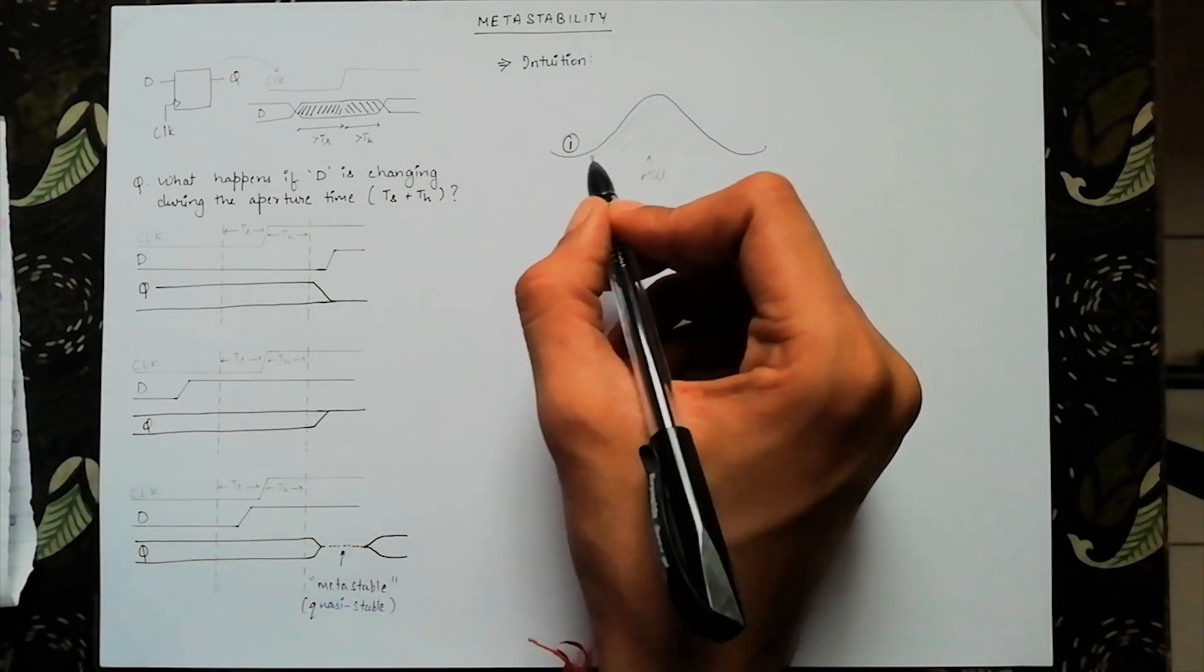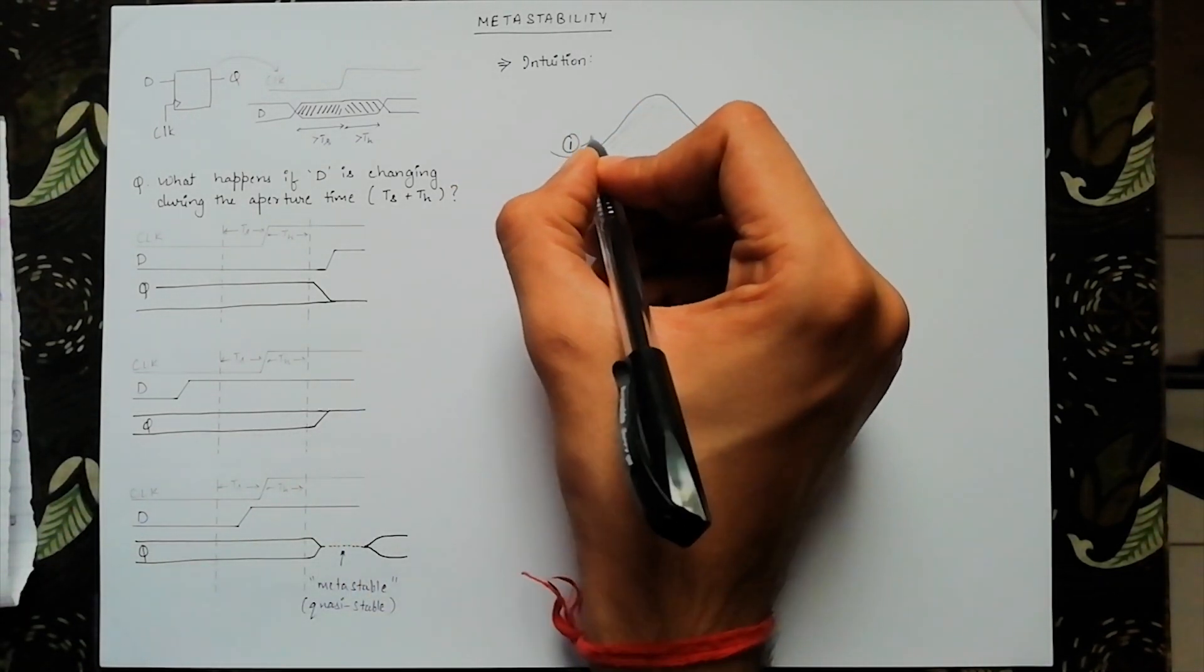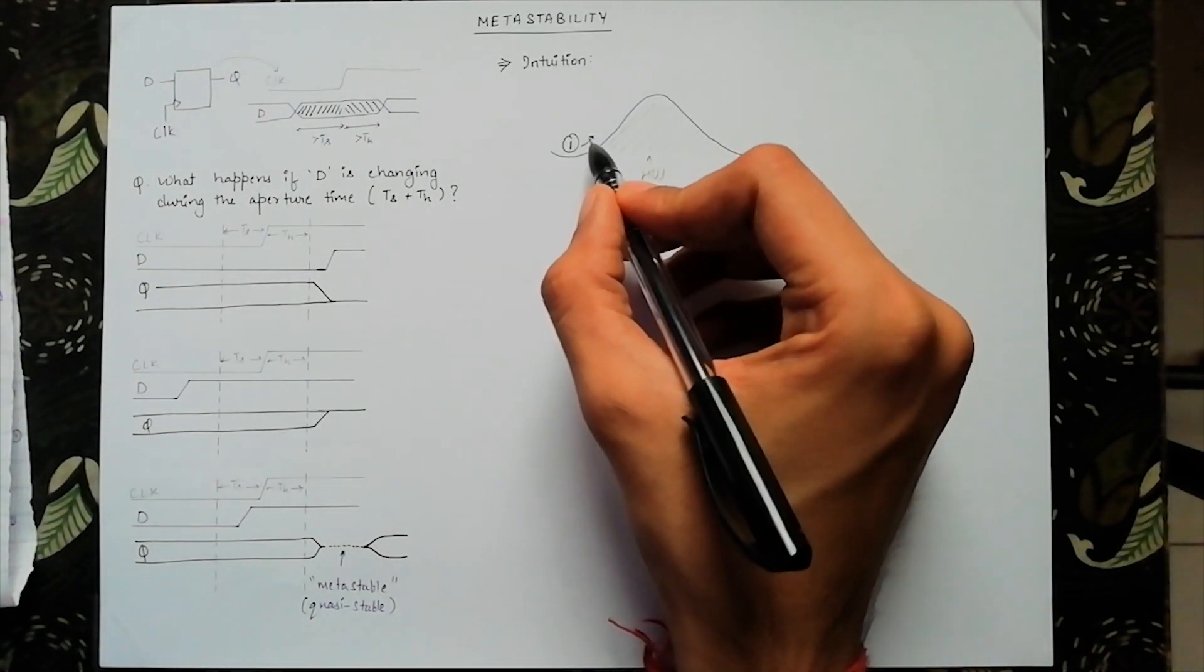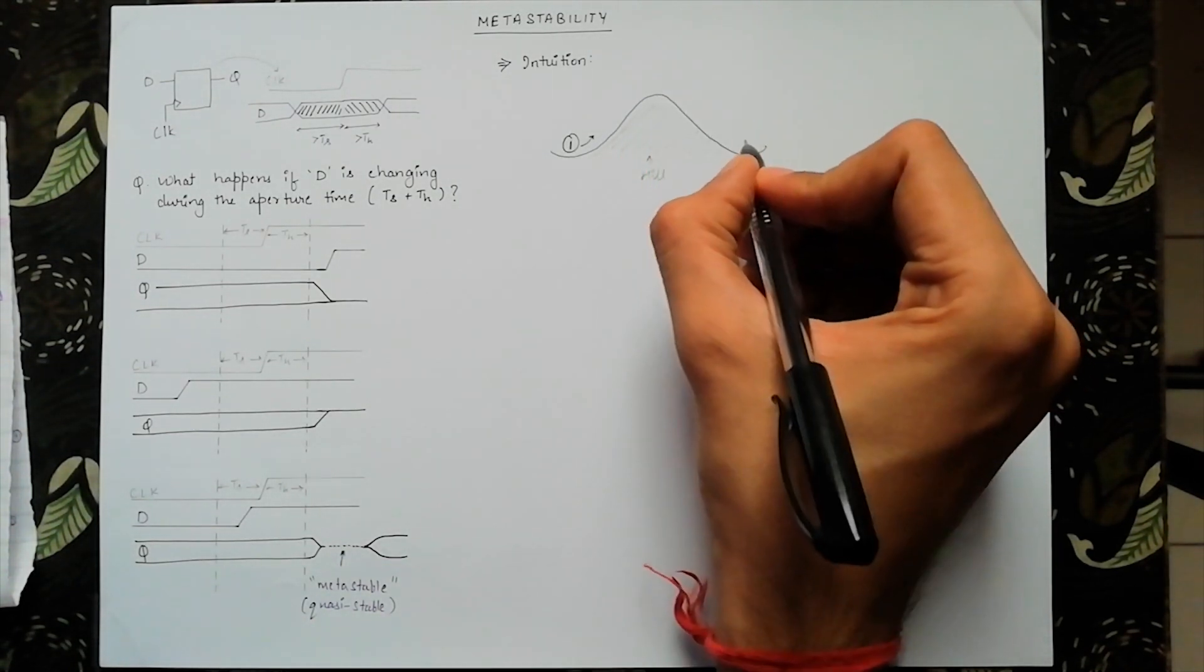From position 1, if you hit the ball lightly, it remains where ball 1 is. But if you hit the ball hard, it crosses the hill and reaches 2.